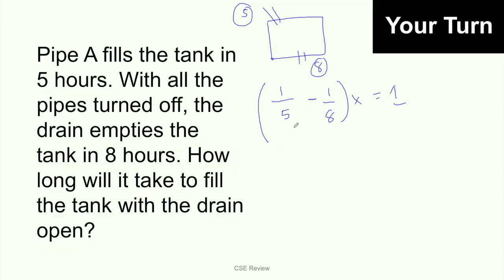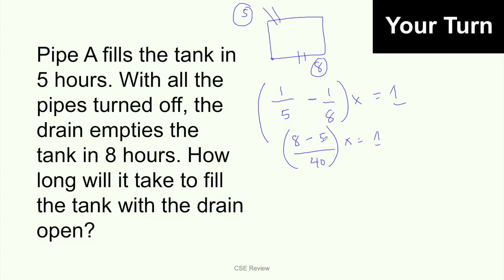What will happen is we find the LCD of 5 and 8, which gives us 40. So you have 40 divided by 5 times 1, which is 8, minus 40 divided by 8 times 1, which is 5. So that's 8x minus 5x over 40, equal to 1. Then 8 minus 5 is 3, so 3/40 x equals 1. If you're not comfortable with this fractions part, go watch my series on fractions.